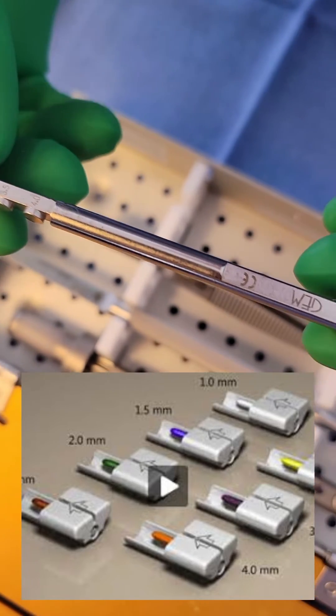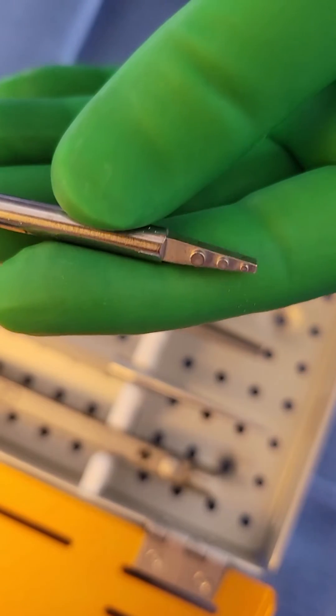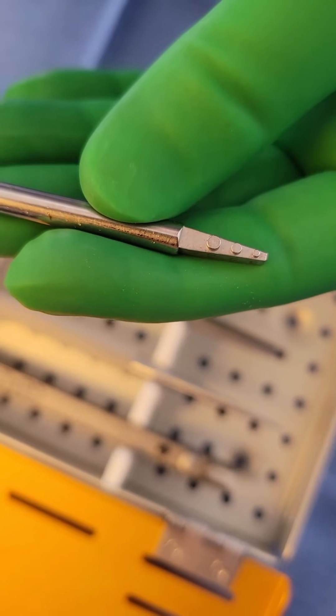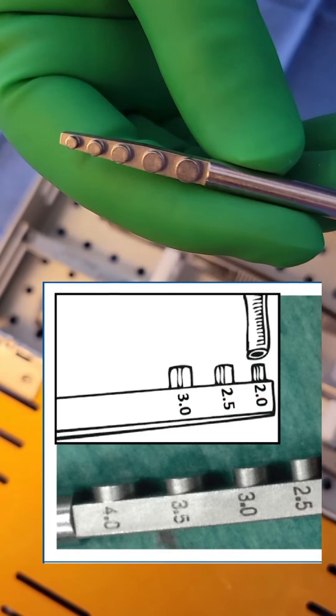As you can see it has numbers 2.0, 2.5, 3.0. It's very tiny and if I turn it over, you can see how they could very easily measure the diameter of the vessel with these dots.